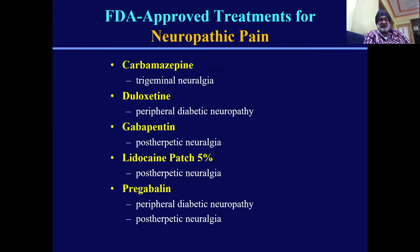The FDA-approved treatment plans for neuropathic pain include: carbamazepine for trigeminal neuralgia, duloxetine for peripheral diabetic neuropathy, gabapentin for post-herpetic neuralgia, lidocaine patch for post-herpetic neuralgia, and pregabalin for peripheral diabetic neuropathy and post-herpetic neuralgia.